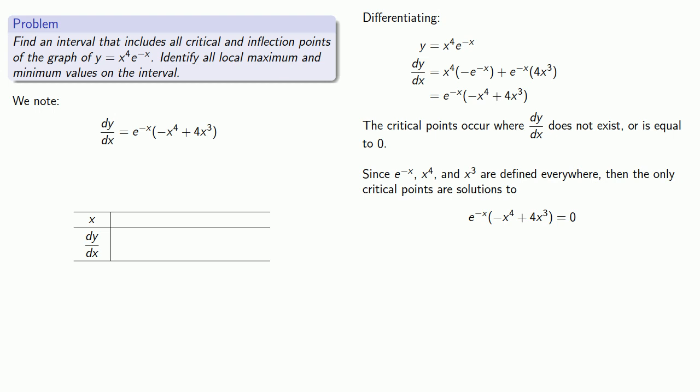Remember, the reason why factoring is useful is that if a product of two things is zero, we know one of them has to be zero. But in this case, we know that e to the minus x can never be zero. So the only critical points are going to be the solutions to minus x to the fourth plus 4x cubed equals zero.